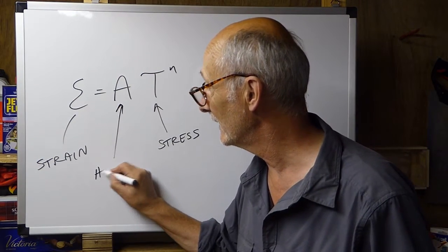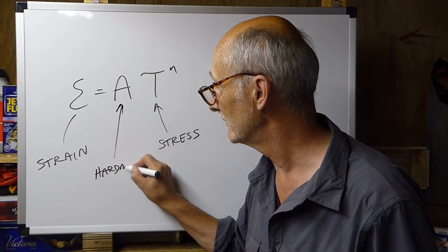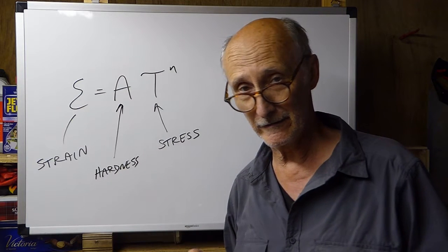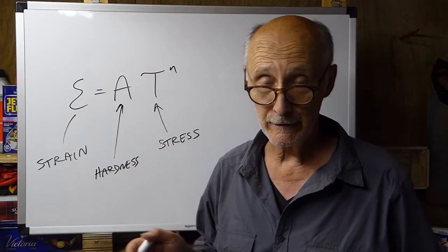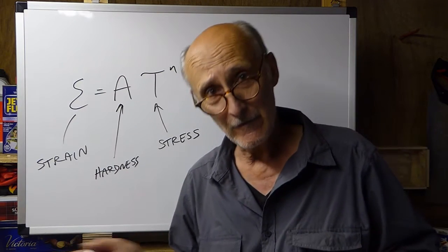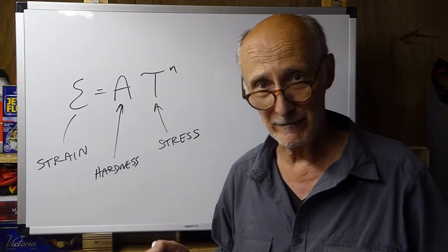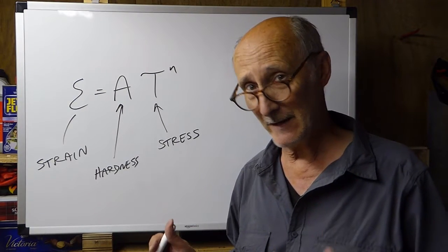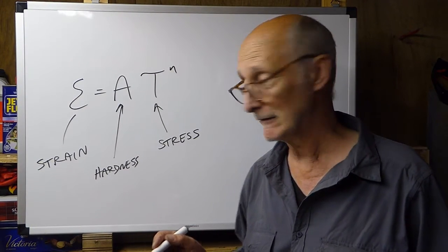So, the amount of strain you get is a function of the hardness parameter, which is the hardness A. In ice, cold ice is generally harder than warm ice. Warm ice is softer. There are other things as well that control it, like chemical composition and impurities in the ice.